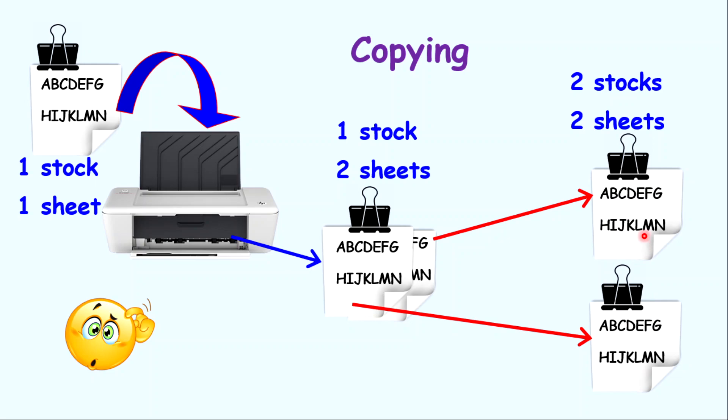So here you have two sheets of paper or two stocks of paper and two binders. So the binders identify the number of stock. So one binder, one stock, two sheets. Two binders, two stocks, two sheets.